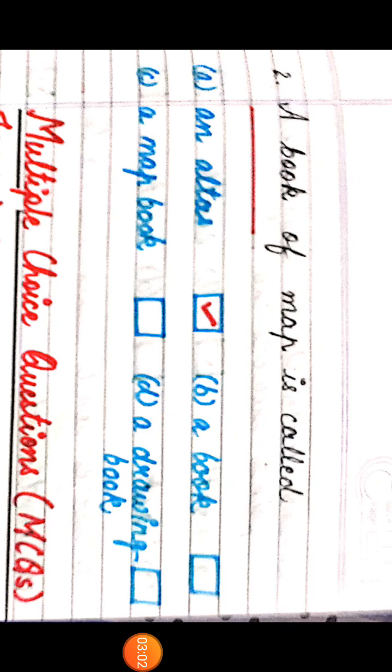The next part: a book of maps is called ___. The options are: Option A, an atlas; Option B, a book; Option C, a map book; Option D, a drawing book. The correct answer is an atlas.